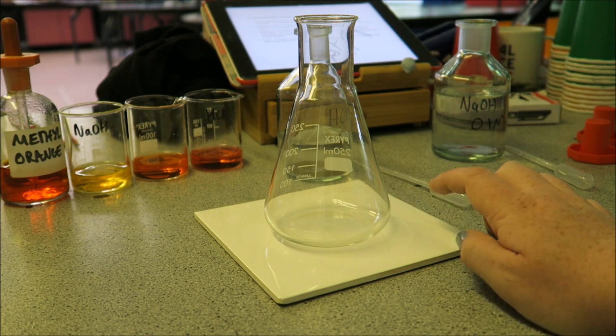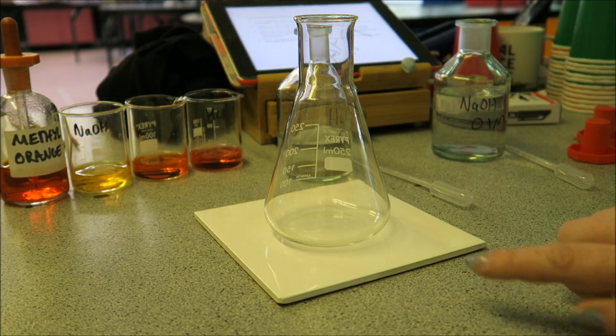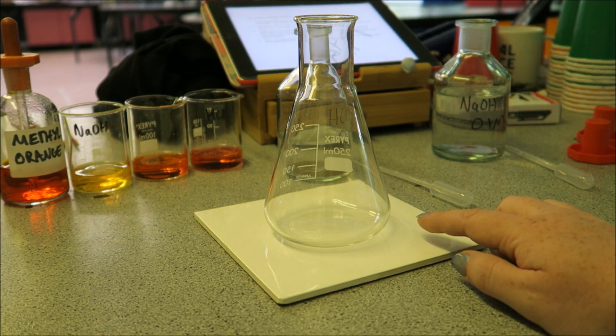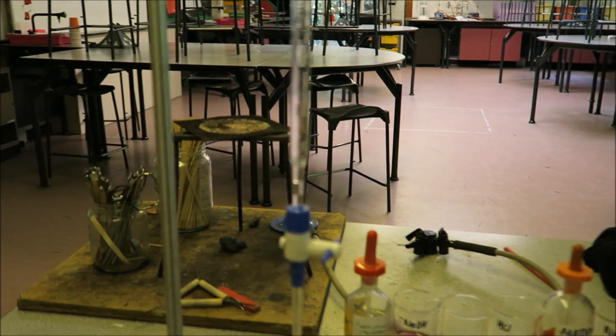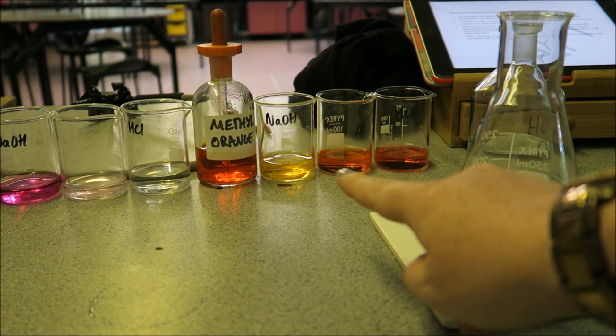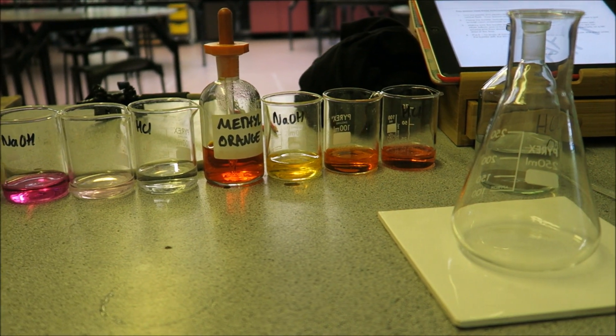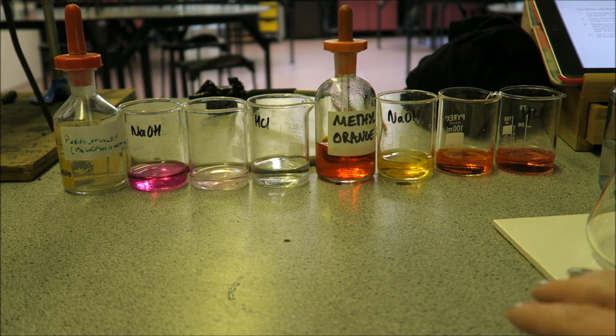Here I have my conical flask on a white tile so I can clearly see the color changes. Into this flask I'm going to be putting my sodium hydroxide. Over here I have my burette where my acid is going to be. In the background you can see the two different indicators, phenolphthalein on this side and methyl orange here.